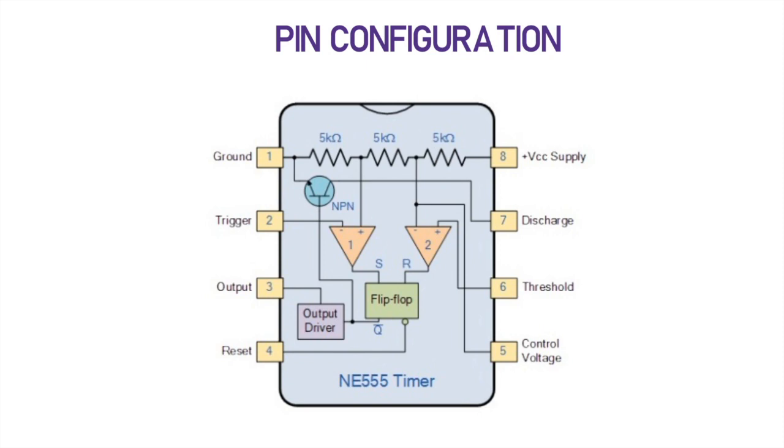Now the eight pins of an IC are namely ground, trigger, output, reset, control voltage, threshold, discharge and the last one which is power supply. Now the next slide will tell about the function and significance of each pin. So you can pause the screen and read about it.